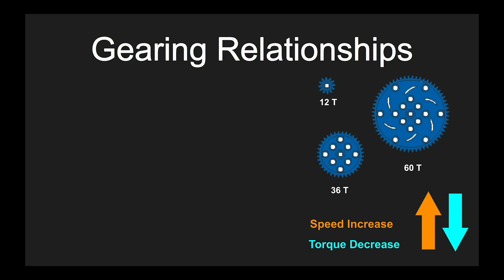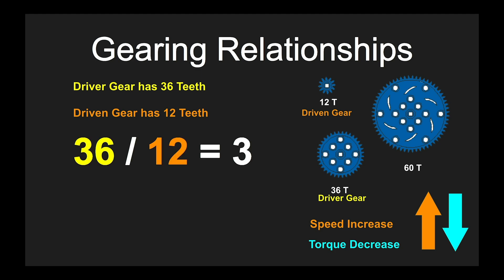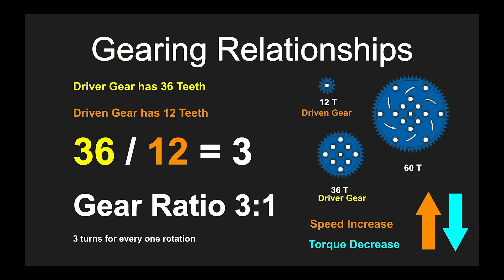So how do we work this out mathematically? The driver gear has 36 teeth and the driven gear has 12 teeth. Because the driver gear is bigger than the driven gear we know that this is a speed increase and a torque decrease. But exactly how much? Well, 36 divided by 12 is equal to 3. That gives us a gear ratio of 3 to 1, because the smaller gear turned three times for every one rotation of the larger gear.